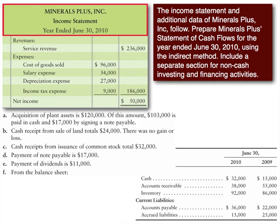Here is a more in-depth example of a statement of cash flows. We're asked to complete all three sections — operating, investing, and financing — using the indirect method. We're given an income statement and a partial balance sheet showing current assets and current liabilities, but no owner's equity section. We're also given additional information, letters A through E, which will be important in completing the statement.